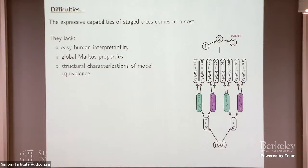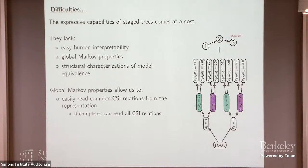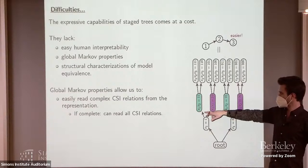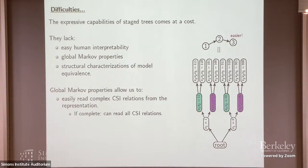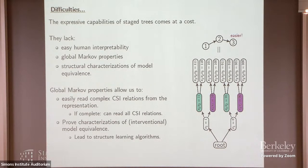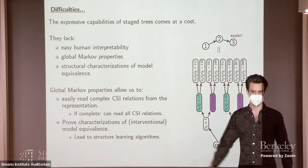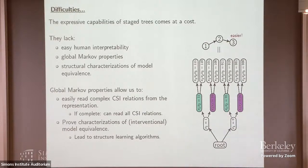Global Markov properties are nice — they allow us to do things like read more complex CSI relations from the representation. Right now it's really only easy to see the relations implied directly by the coloring; anything more complicated requires some mental yoga. Going beyond that, global Markov properties are often our main tool for proving characterizations of model equivalence or interventional model equivalence, and in turn these drive many of our structure learning algorithms, like GES or the PC algorithm.